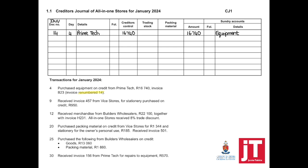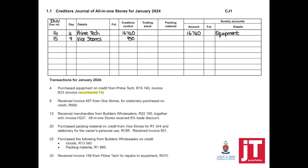Day nine: received invoice 457 from Vice Stores for stationery purchased on credit, 950. We don't use invoice 457 — we renumber it. The next number is 15. This happened on day nine. From whom did we purchase? Vice Stores. How much do we owe? 950. For what reason? Stationery.